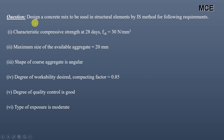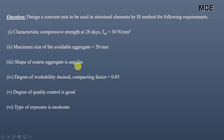The given problem requires designing a concrete mix for structural elements with the following requirements: characteristic compressive strength at 28 days should be 30 N/mm², maximum size of available aggregate is 20 mm, shape of coarse aggregate is angular, degree of workability desired is a compacting factor of 0.85, degree of quality control is good, and type of exposure is moderate.